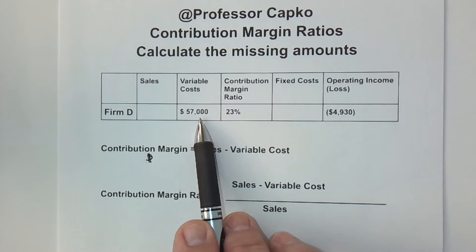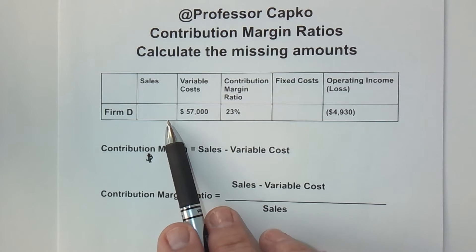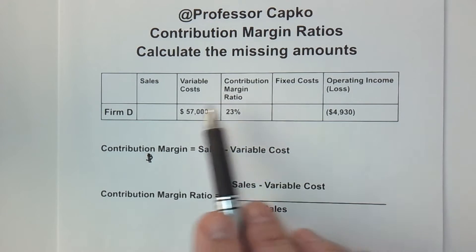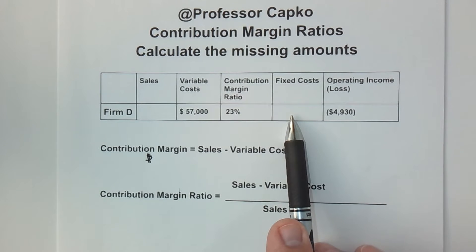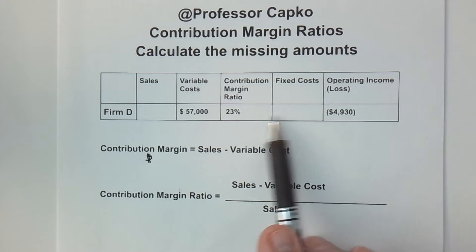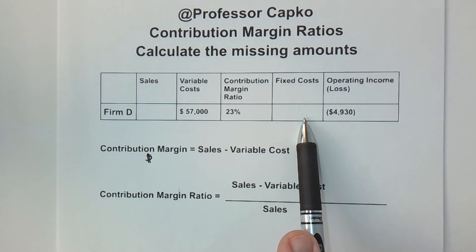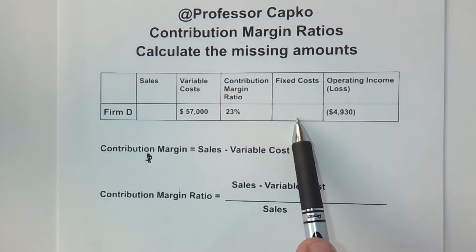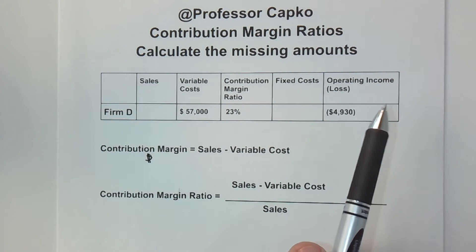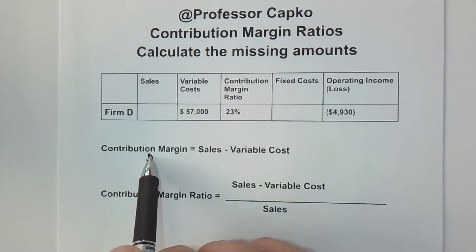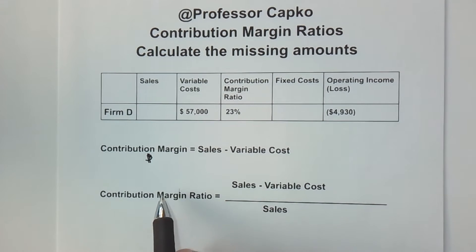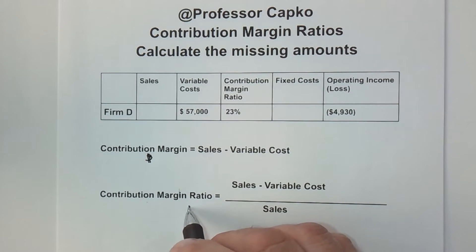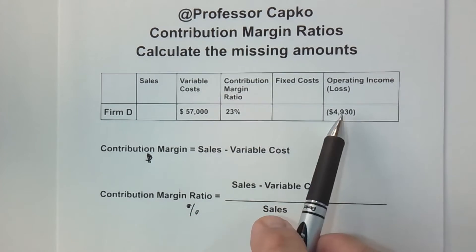Variable costs, just like it says, vary with the amount of sales — so if sales go up, variable costs are going to go up. Contrast that to fixed costs, which are static; they don't change dependent upon sales. Think of rent as an example: it doesn't matter to your landlord how many things you sell or if you don't sell anything at all — your rent is going to stay the same. So contribution margin is in the form of dollars, while contribution margin ratio is a percentage — what percentage of sales contributes toward our operating income.